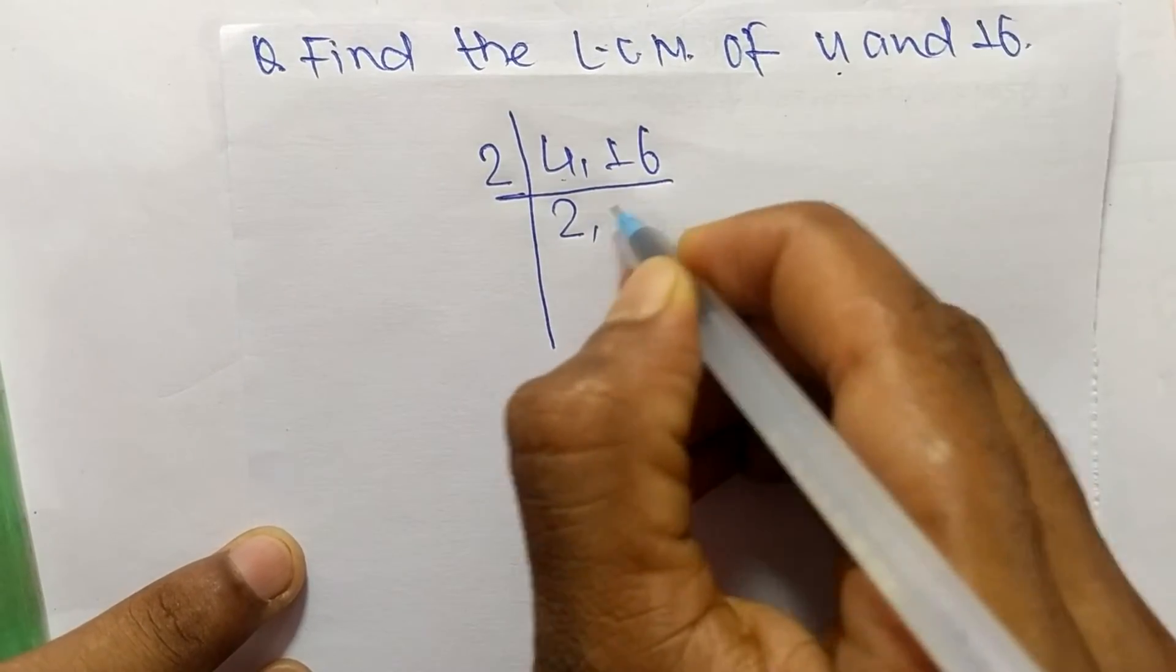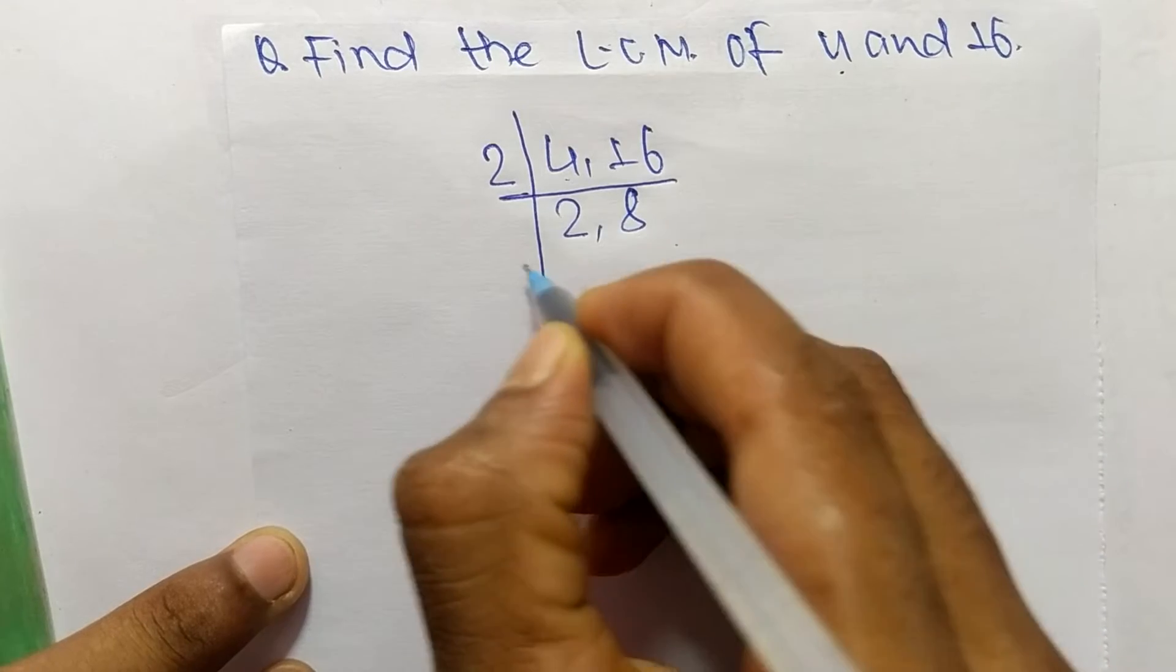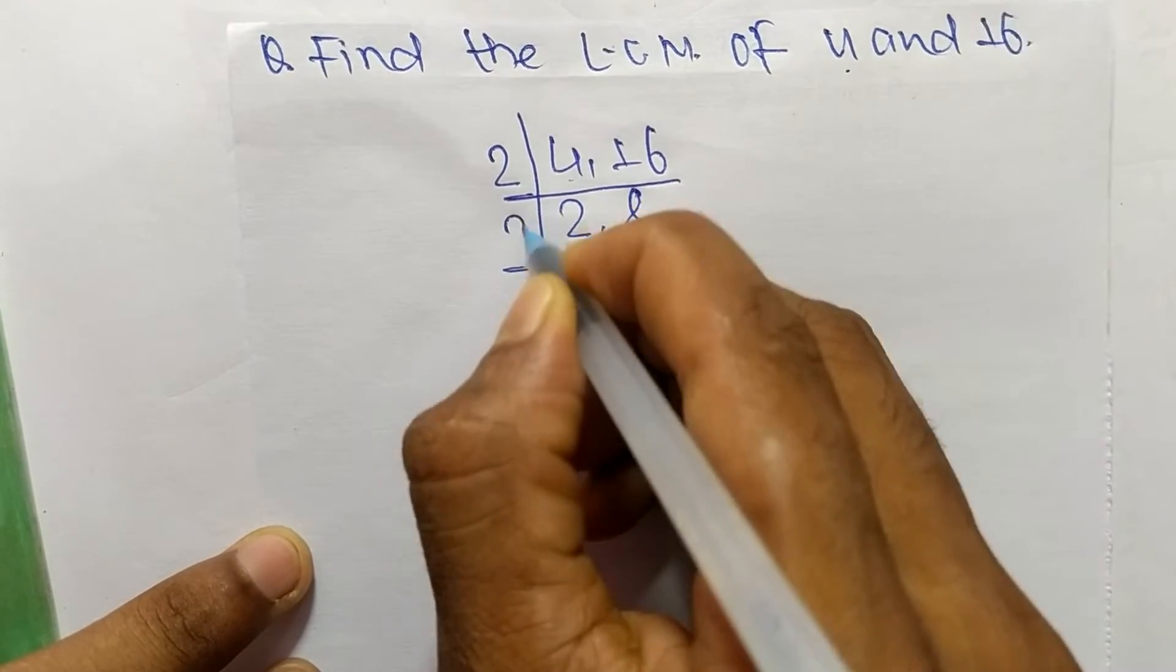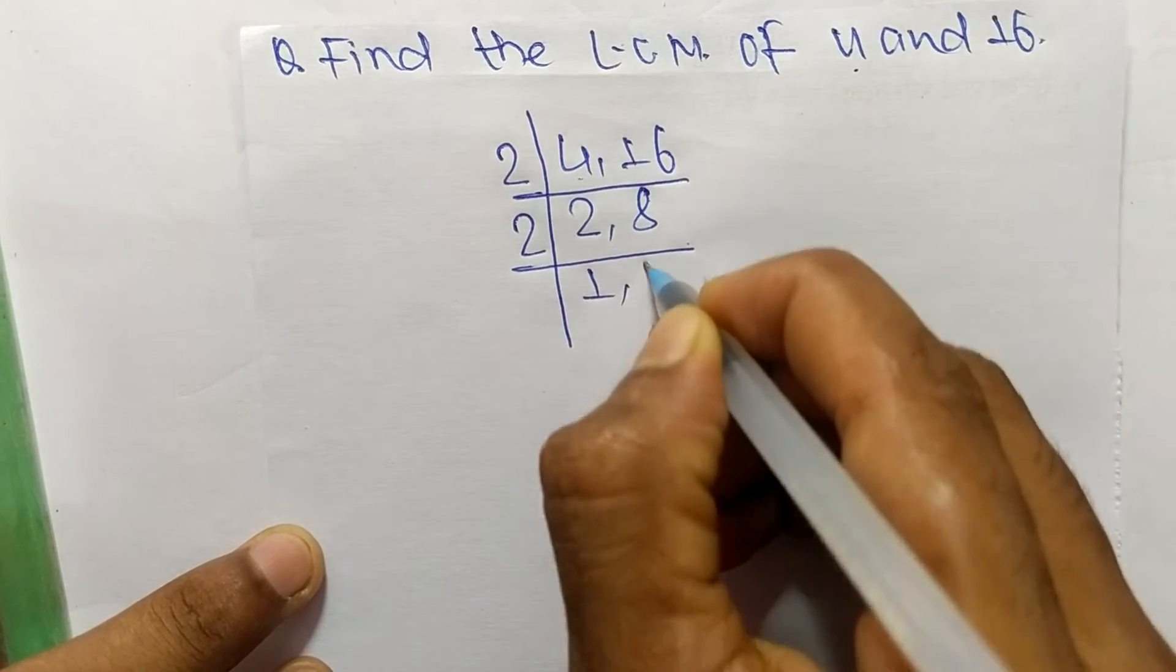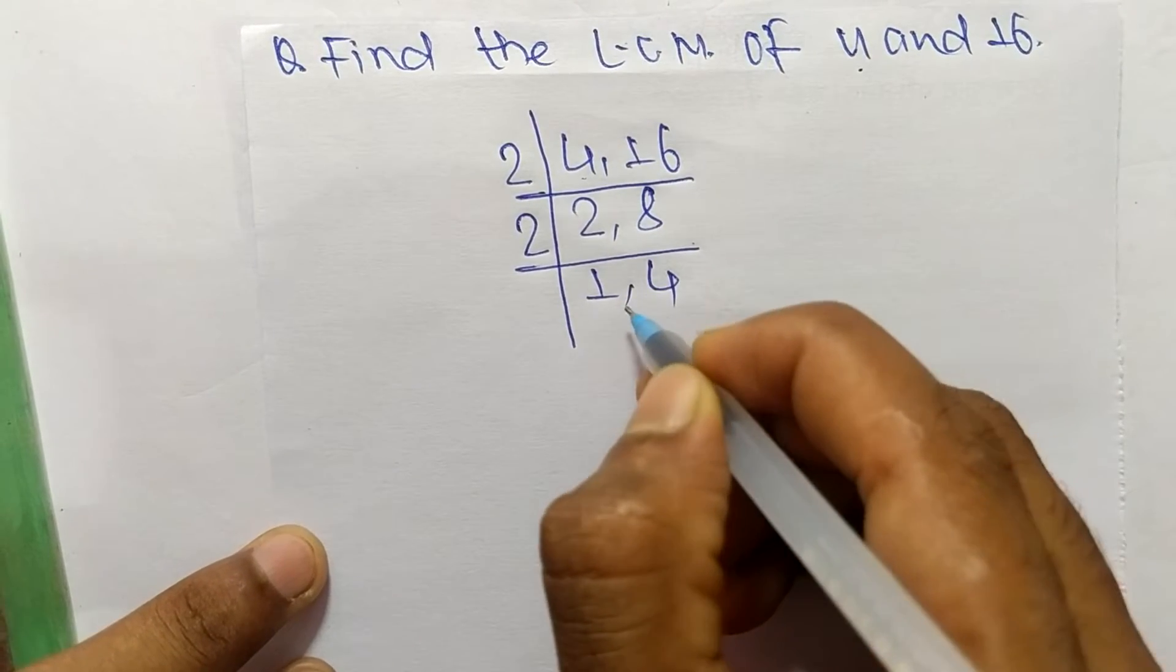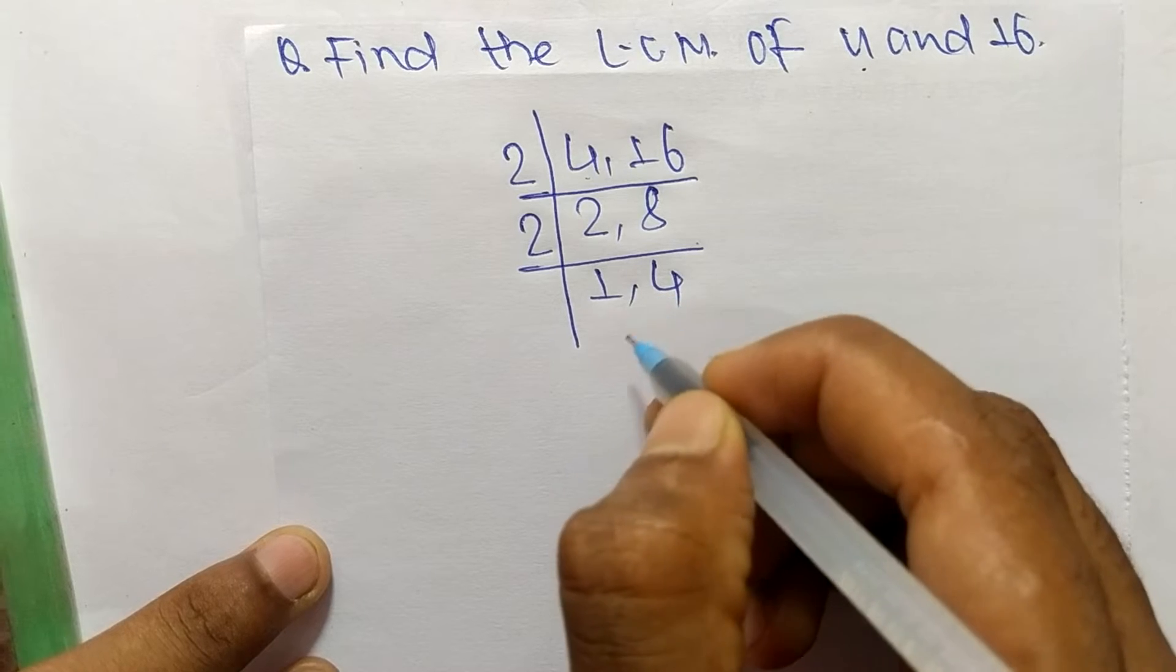Again, 2 can divide both numbers, so 2 times 1 equals 2 and 2 times 4 equals 8. Now we have 1 and 4, which are not exactly divisible by the same number.